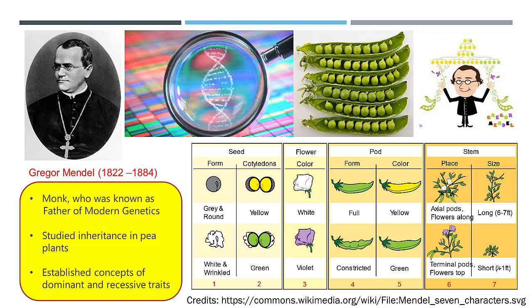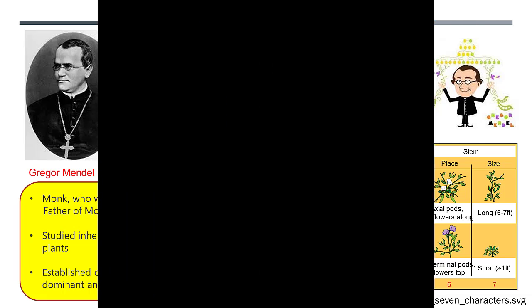He took time to understand different generational phenotypes before establishing concepts of dominant and recessive traits. These traits include phenotypic differences at the seed, flower, pod, and stem of the pea plant, as illustrated above. For this discovery, Mendel is honored with the title Father of Modern Genetics.